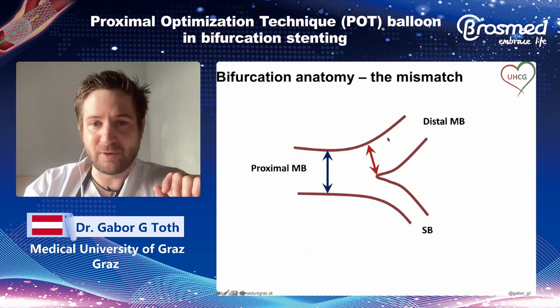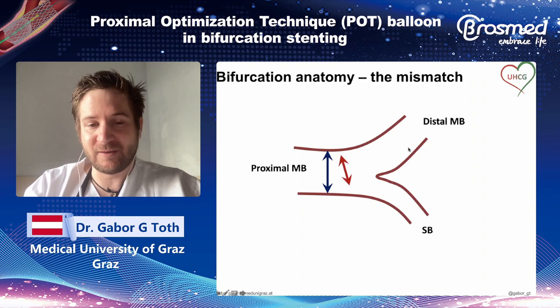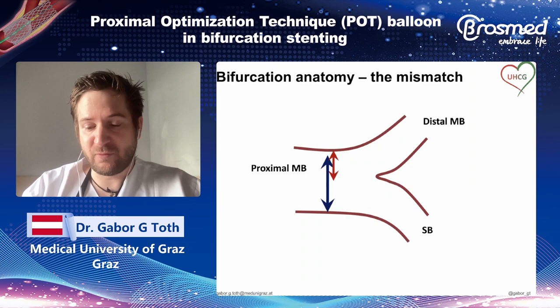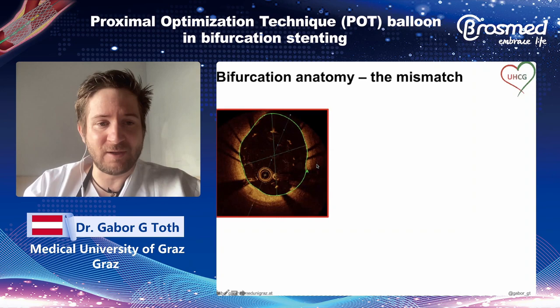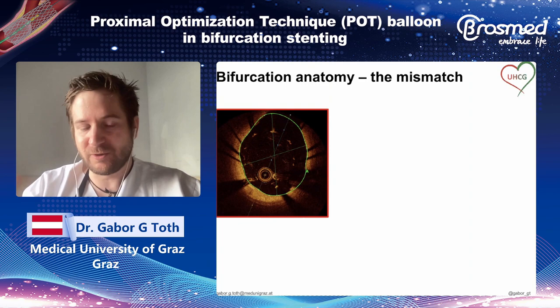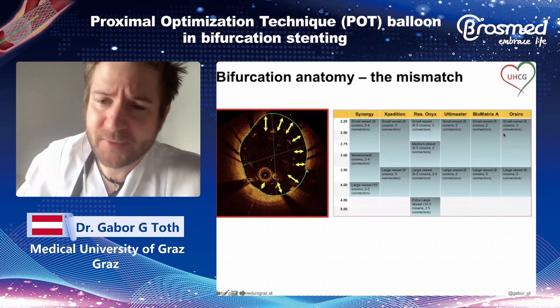If you put your stent proximal to the distal main branch, it will be sized first according to the distal main branch diameter, but of course there is a marked mismatch compared to the proximal main branch, and the larger the side branch, the greater this mismatch. This is important to keep in mind because when you put the stent, it will be massively malaposed in the proximal main branch — but it has to be corrected. This OCT image on the left side shows something you don't want to see at the end of the procedure; this massive malaposition has to be corrected.